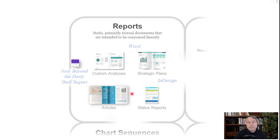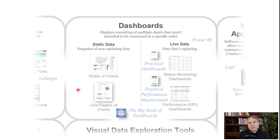In the way people tend to use this term in everyday conversation, they tend to use it to refer to essentially static, primarily textual documents that are intended to be consumed linearly — read from beginning to end. These are things like custom analysis reports, strategic plans, articles in newspapers and magazines that contain charts, status reports. You might use word processing tools like Microsoft Word or Adobe InDesign to create these. There's a good course, Ann Emery's Soar Beyond the Dusty Shelf Report, which talks about how to create these types of things. How might this be distinct from something like dashboards? In the way people tend to use that term, they refer to displays consisting of multiple charts that aren't intended to be consumed in a specific order — so a report is designed to be read in a certain order, but dashboards tend to be consumed in any order, with no predefined sequence.